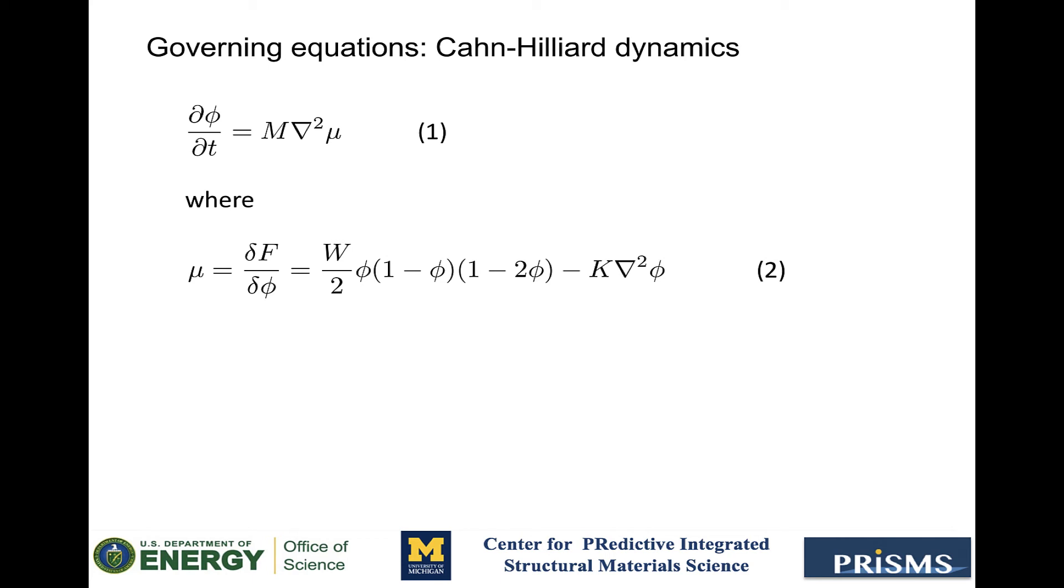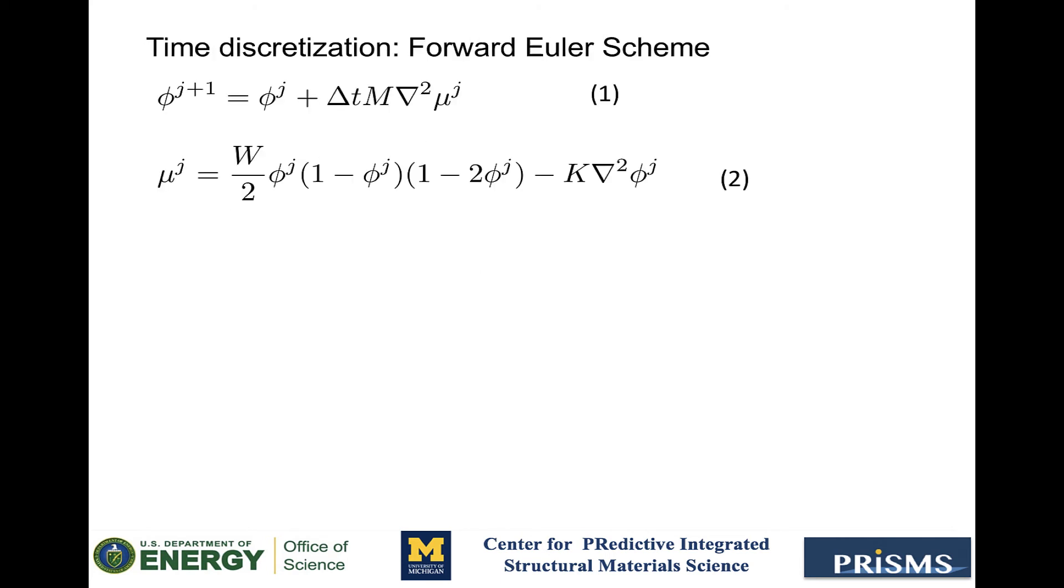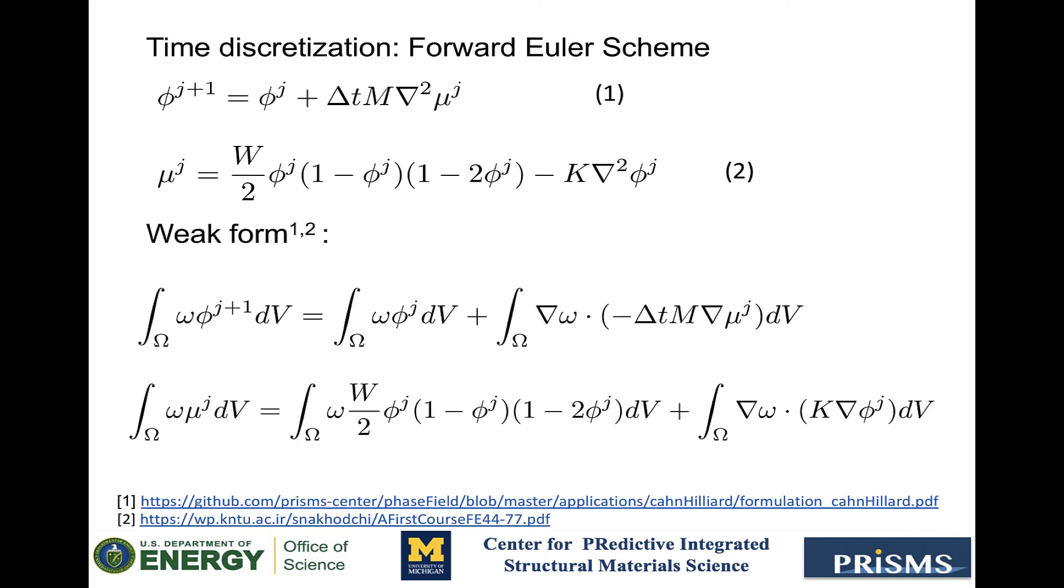For convenience, we can split the Cahn-Hilliard equation into coupled equations for two fields, phi and mu, so that we do not have to calculate a fourth order derivative. And for Prisms-PF, we will need to discretize the equations in time using the forward Euler scheme. Finally, here are the equations in the weak form.